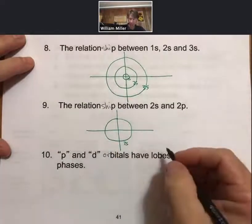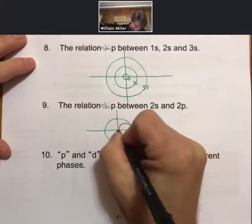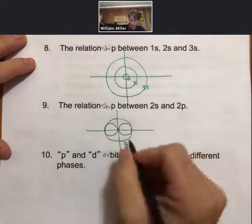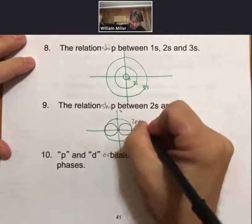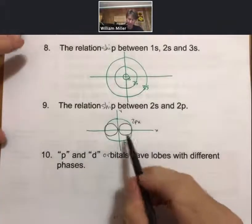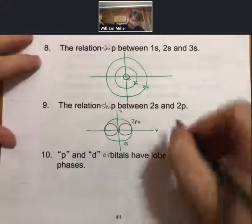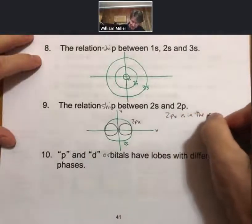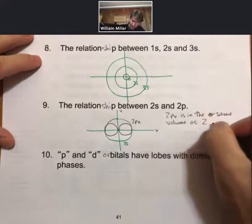Then 2p doesn't touch the nucleus, and it fits, again, within the same space. If I define these as x and y, then this is going to be 2px along the x-axis. And so here's what I mean when I say that 2px is in the same volume as 2s.